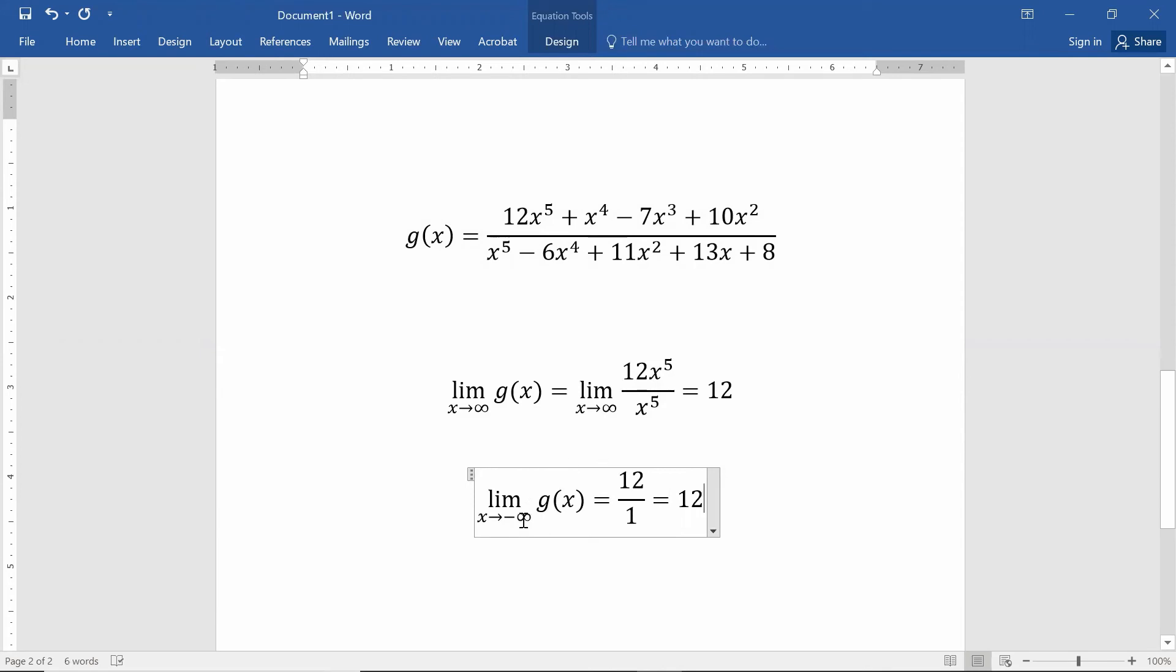And again, we're getting a positive 12 because x to the fifth over x to the fifth, that's negative over negative. Those negatives cancel each other out. And so you get a positive 12.